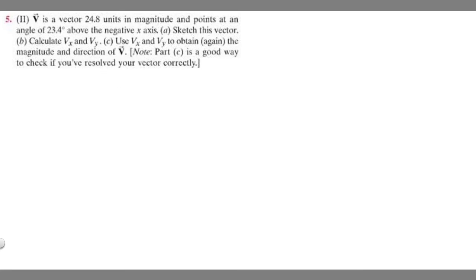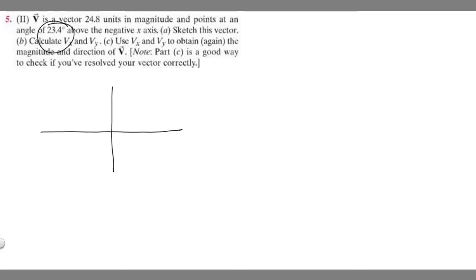What we want to do first is just draw a diagram of what's going on. We're told V is a vector, 24.8 units in magnitude, and points at an angle of 23.4 degrees above the negative x-axis. So if we draw a y-axis and x-axis, we know it's 24.8 units long and it's at an angle of 23.4 degrees above negative x. This is negative x, and we're going 23.4 degrees above, so our line goes this way, 23.4 degrees, and it's 24.8 units long.